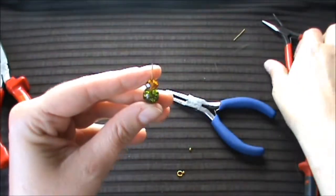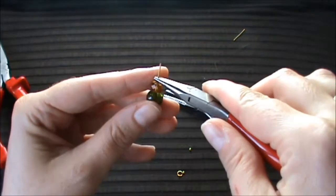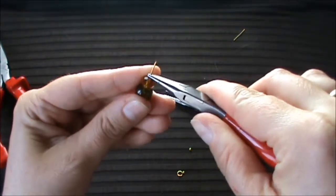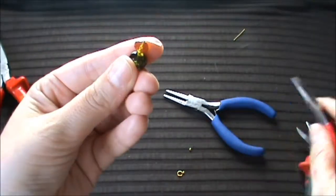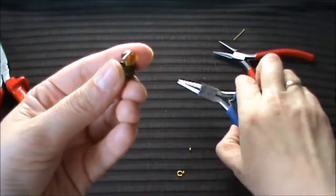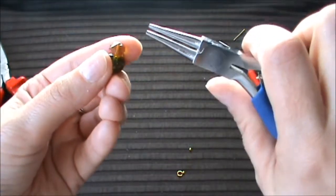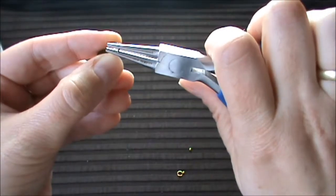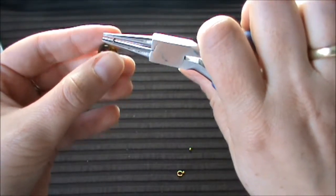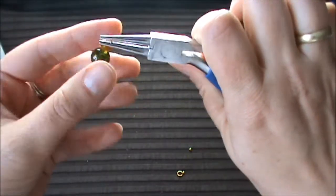Now bend the top of the wire over the pliers to a 90 degree angle. Now use the round nose plier to grip the top of the wire and to turn the wire into a loop. Now your charm is done.